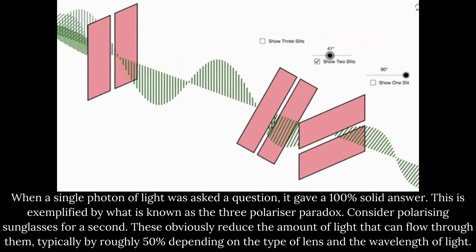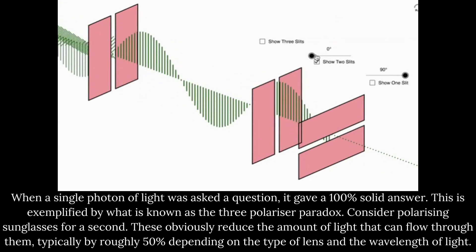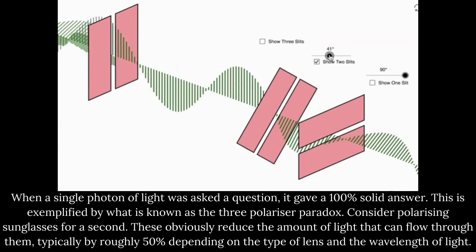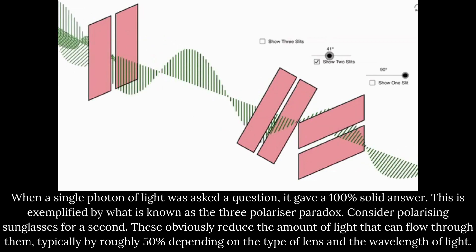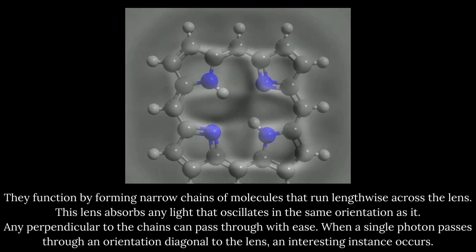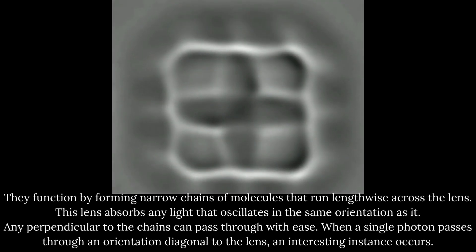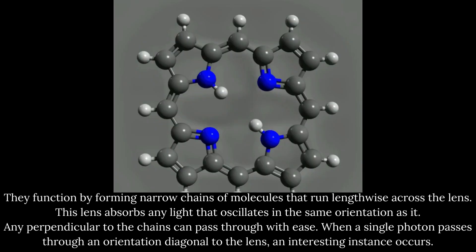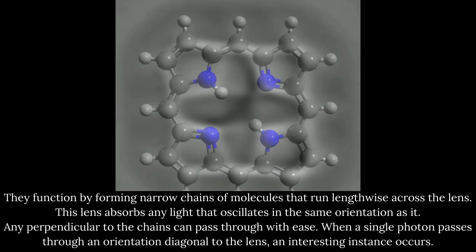This is exemplified by what is known as the three-polarizer paradox. Consider polarizing sunglasses for a second. These obviously reduce the amount of light that can flow through them, typically by roughly 50% depending on the type of lens and the wavelength of light. They function by forming narrow chains of molecules that run lengthwise across the lens. This lens absorbs any light that oscillates in the same orientation as it. Any perpendicular to the chains can pass through with ease.